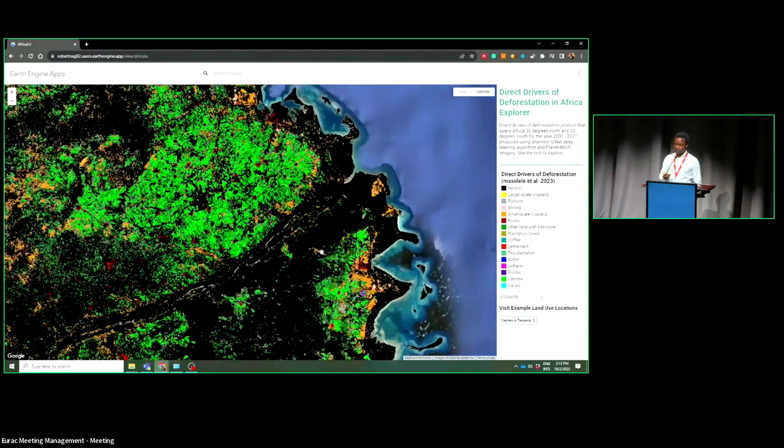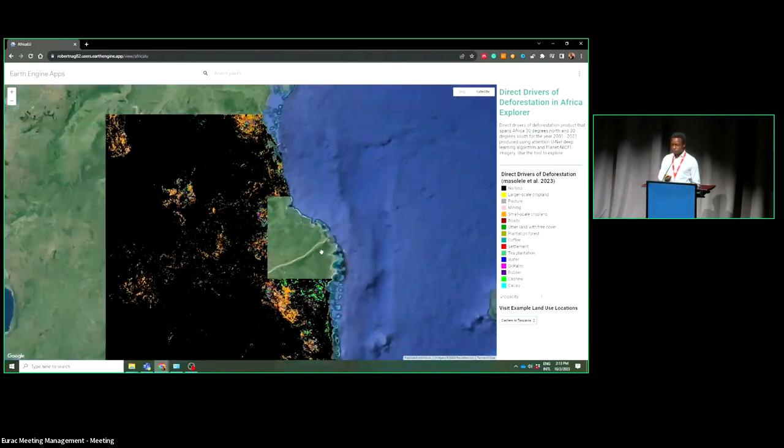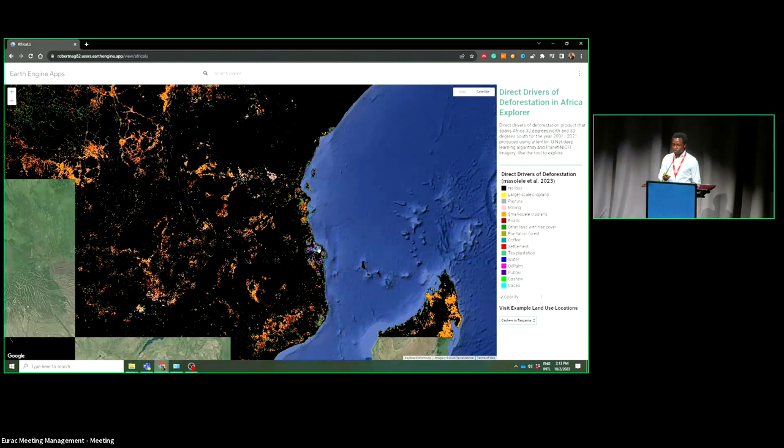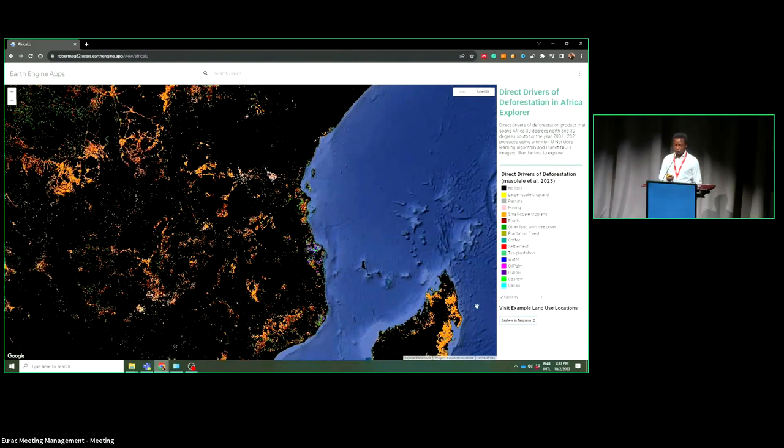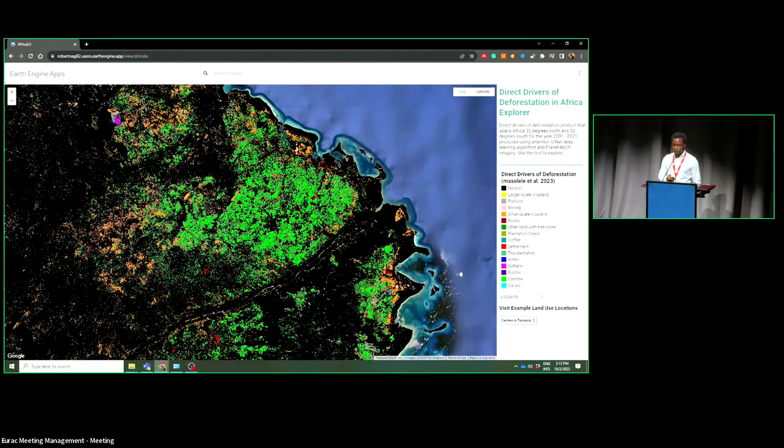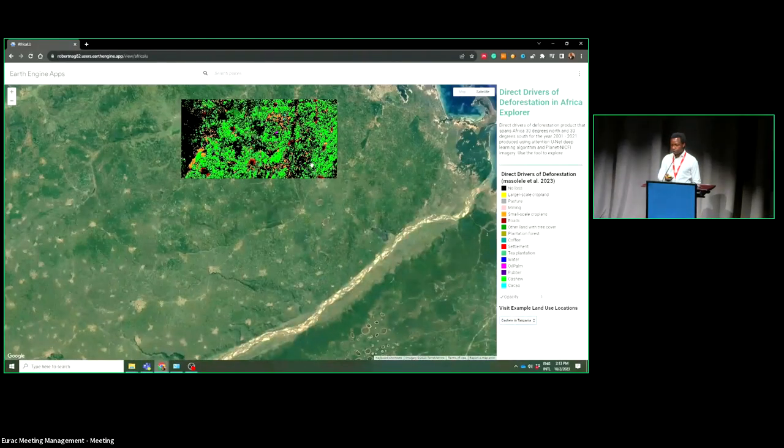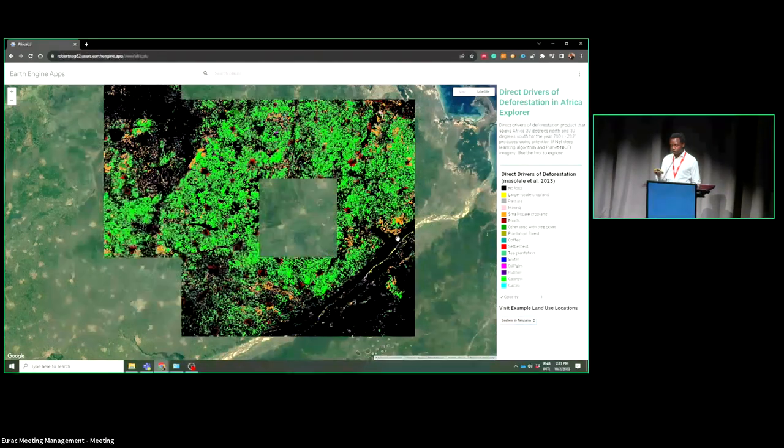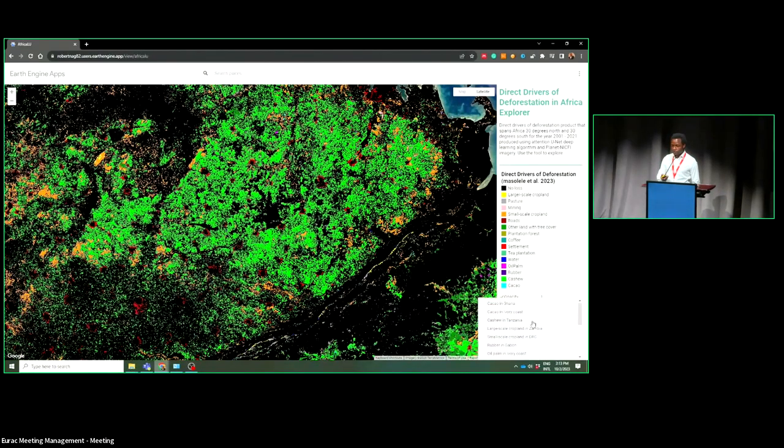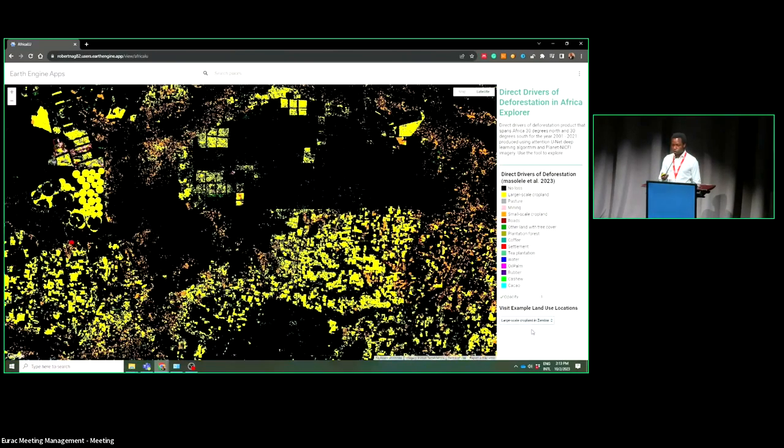This is in Tanzania. You can see a lot of cashew. This is the eastern part of the country between the border between Tanzania and Mozambique. We have a lot of cashew farming, which have been converting a lot of dry forest to cash crop. But you can also see an increase in terms of settlement areas, meaning that there's a lot of economic activities because of cashew plantation, also population increase.